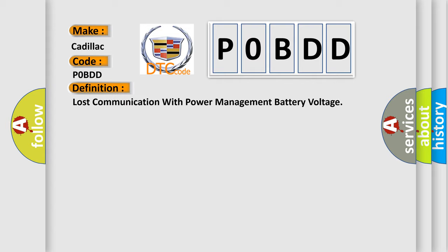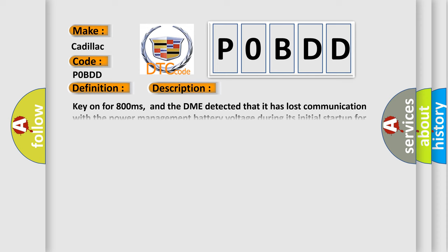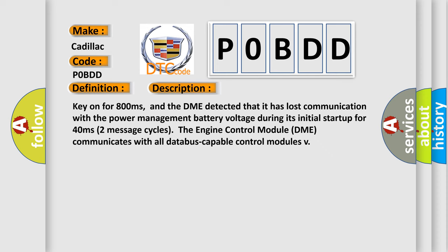And now this is a short description of this DTC code. Key on for 800 milliseconds, and the DME detected that it has lost communication with the power management battery voltage during its initial startup for 40 milliseconds. Two message cycles the engine control module DME communicates with all data bus capable control modules.